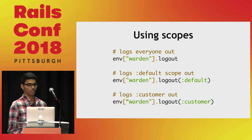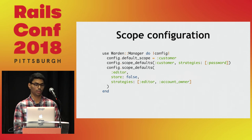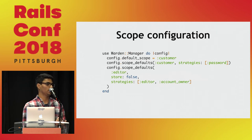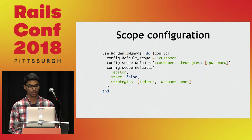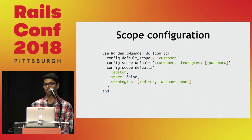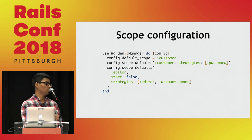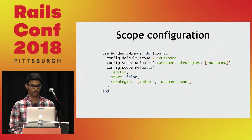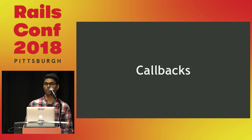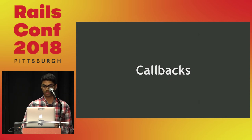We can also add configurations per scope: we can define which scope is the default for our application, define which strategies to use per scope, and say whether a scope should be stored in the session or not. Now we're going to see some callbacks. Warden provides callbacks for authentication events, and we're going to see which ones are available and how to use them.